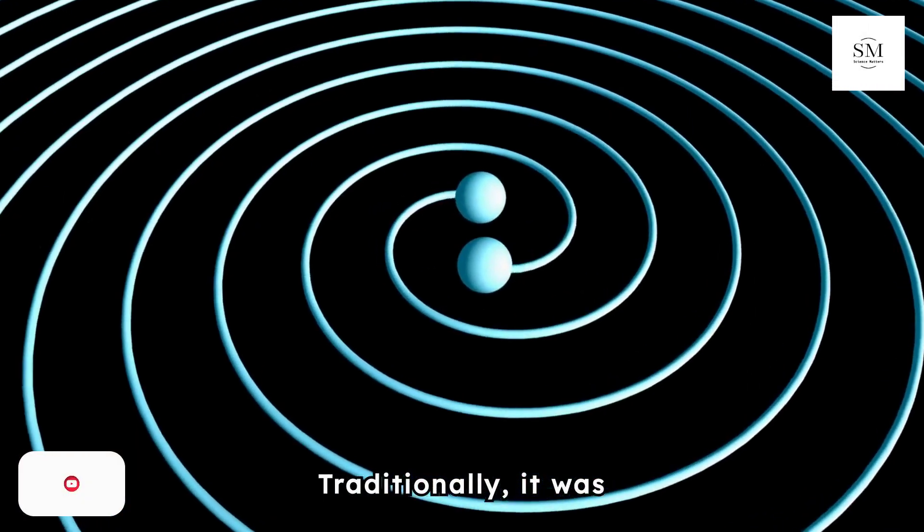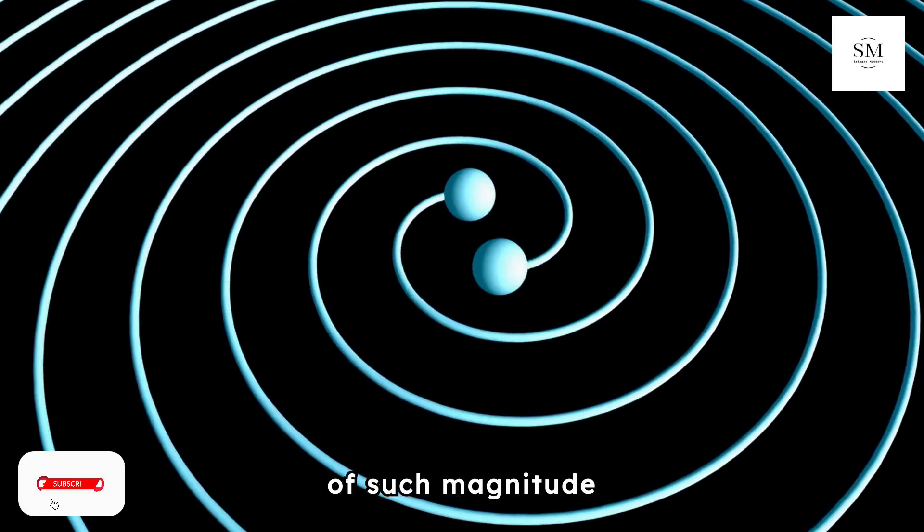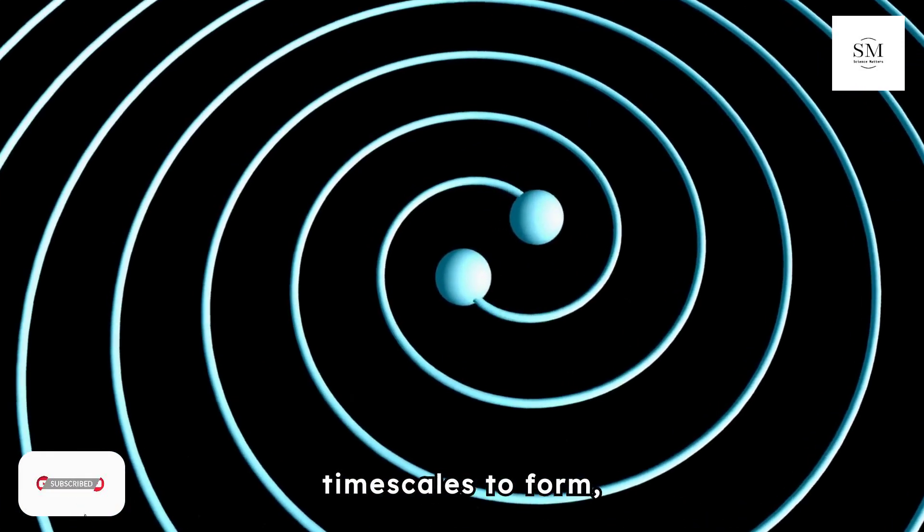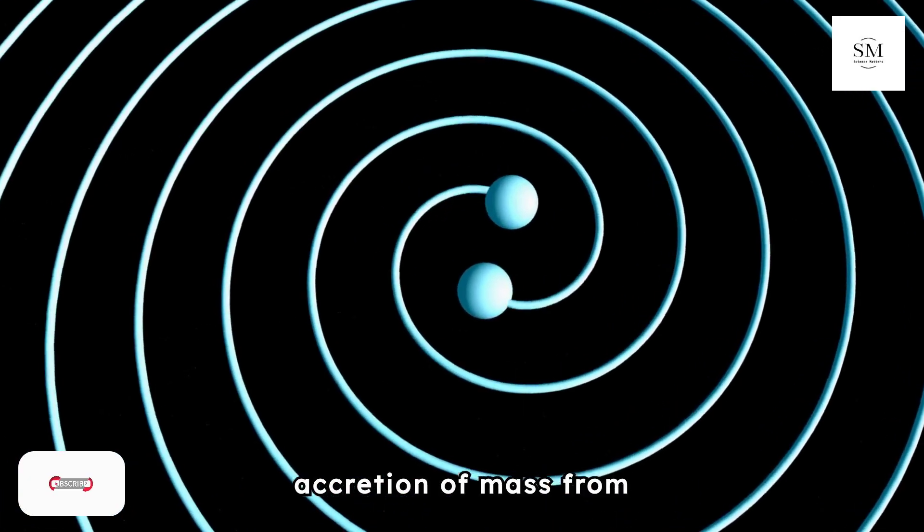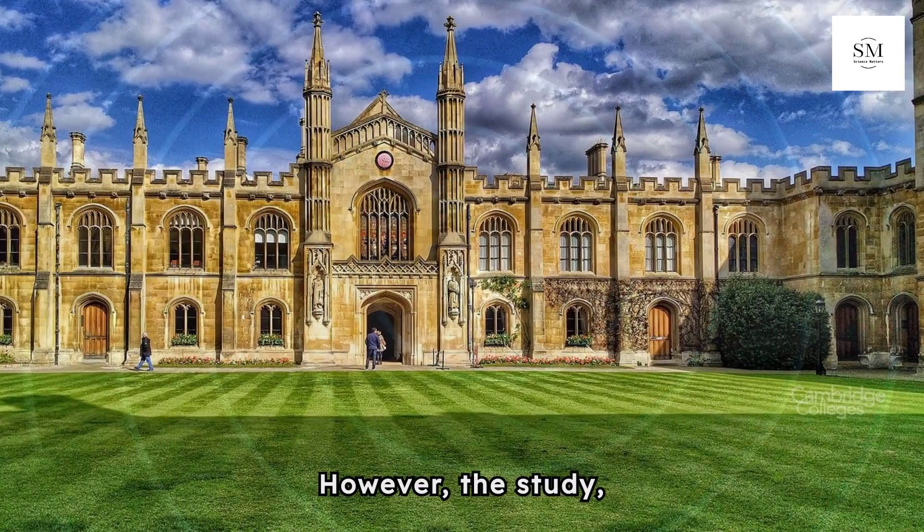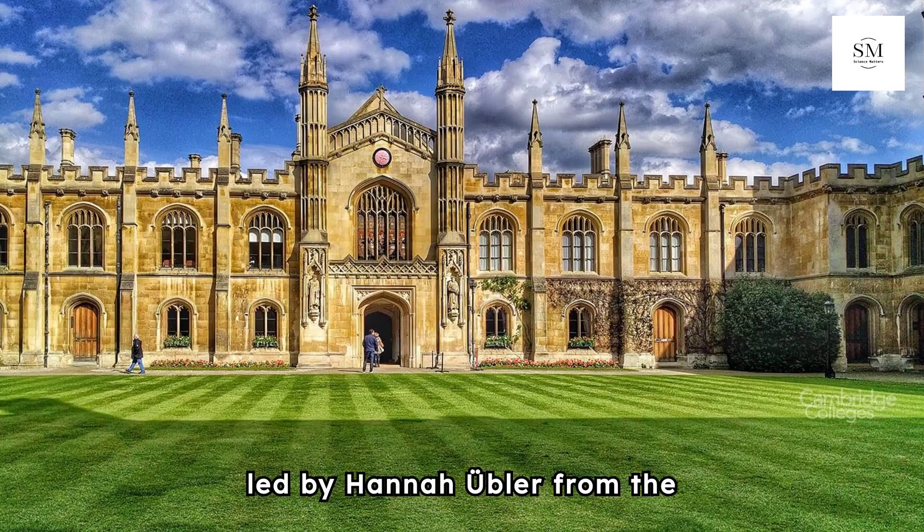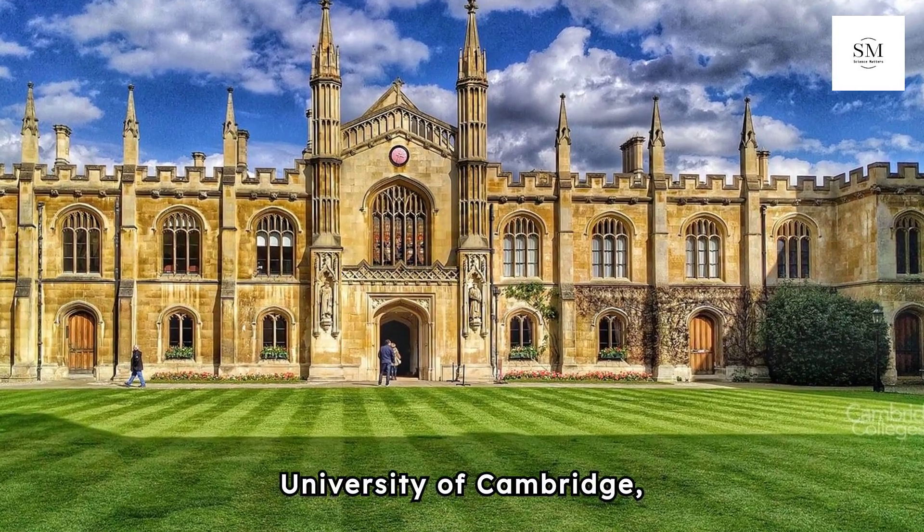Traditionally, it was believed that black holes of such magnitude required much longer timescales to form, primarily through the gradual accretion of mass from collapsing stars. However, the study, led by Hannah Ubler from the University of Cambridge, suggests something else.